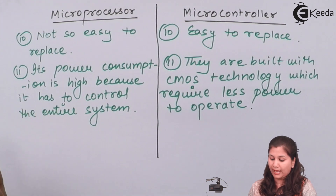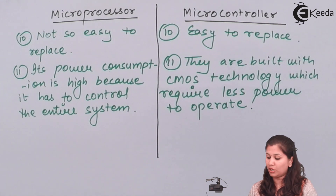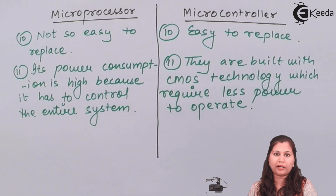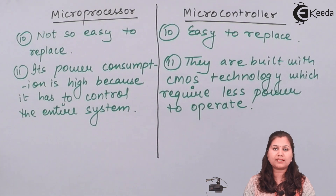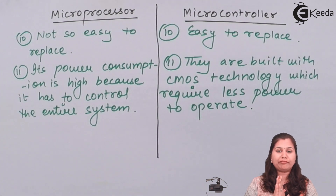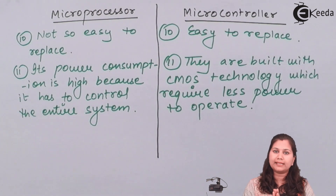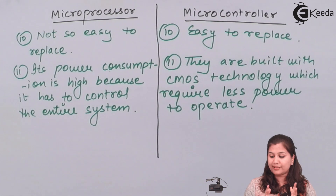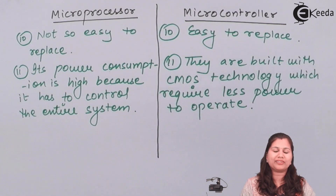To summarize, microprocessors have high power consumption because they have to control the entire system, whereas microcontrollers require less power to operate due to CMOS technology. The main difference between the two is that in microprocessors, the memory is external, whereas in microcontrollers, the memory is embedded on the same chip. I hope this topic is now clear to you. Thank you.